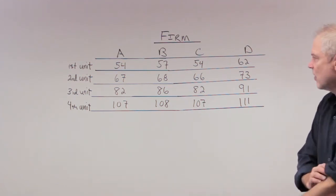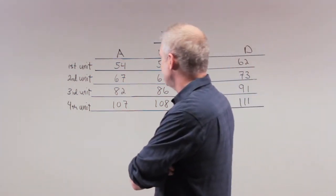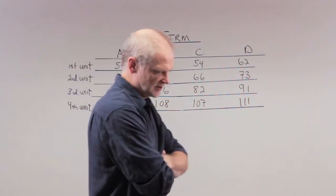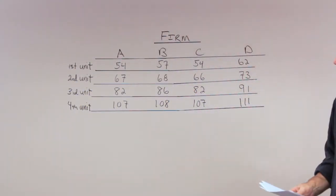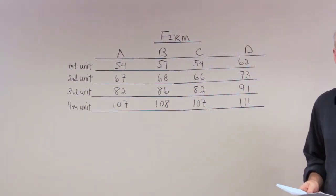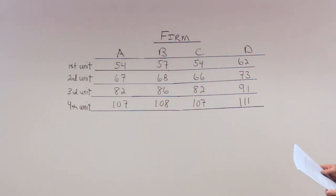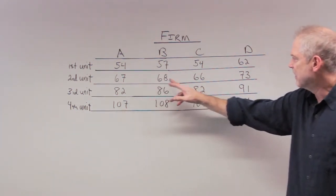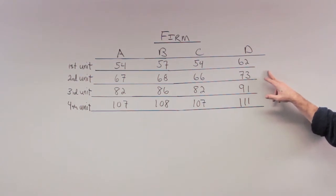Now, if it wants to get rid of these 8 units of pollution, and we're going to put it out to auction, what are firms going to bid? So these firms would never bid anything above $73.